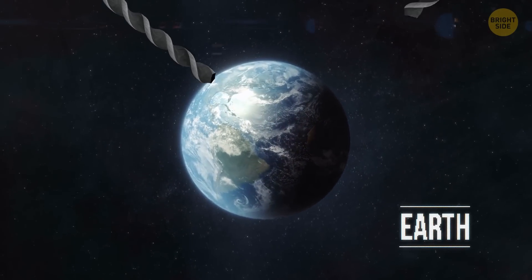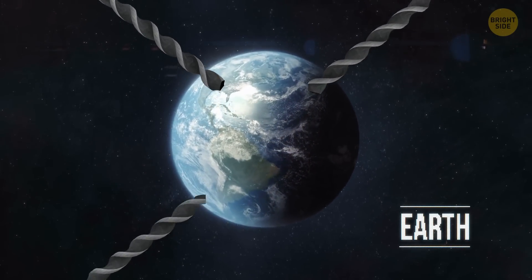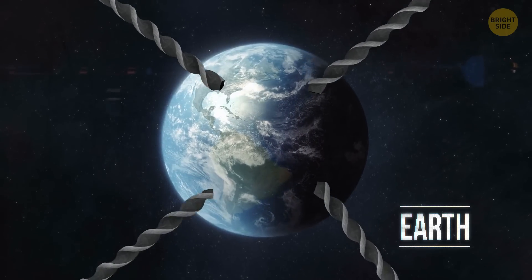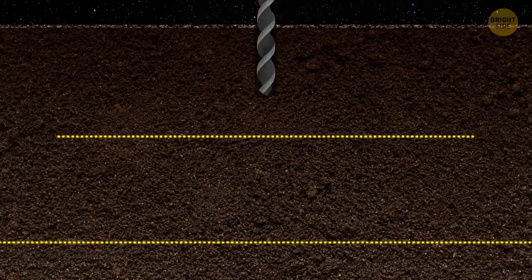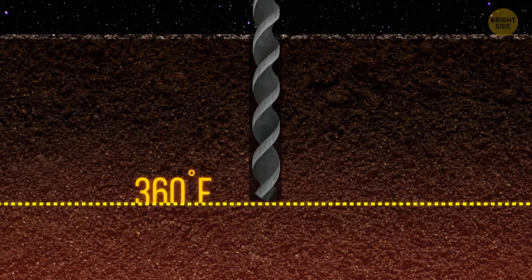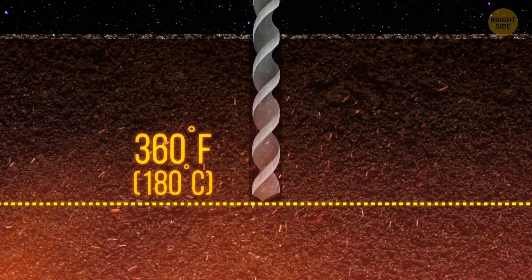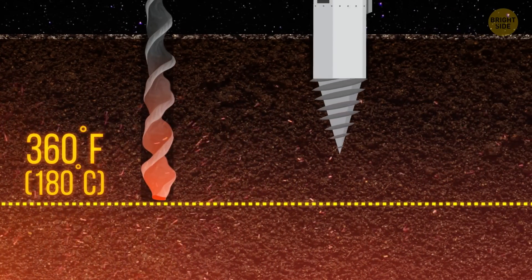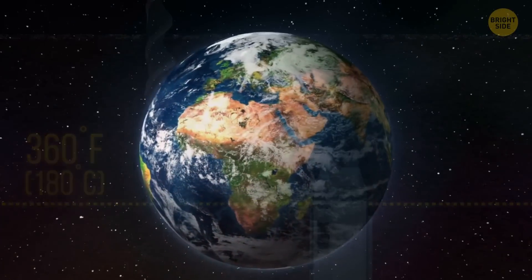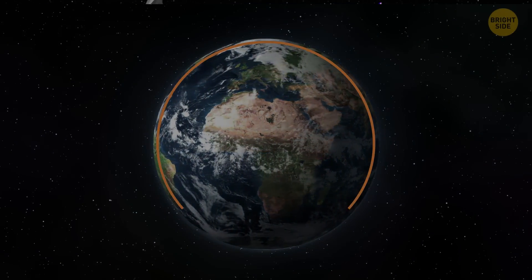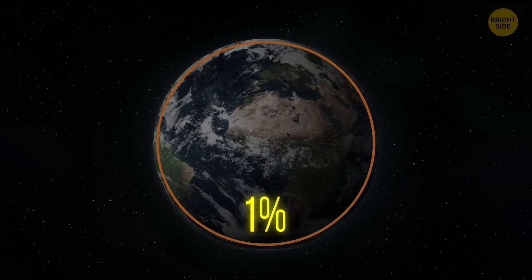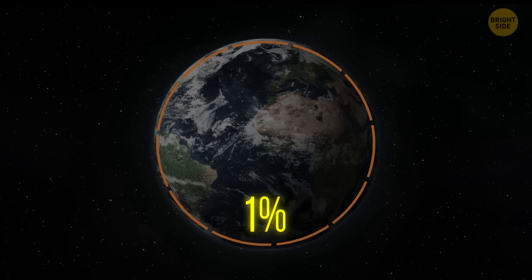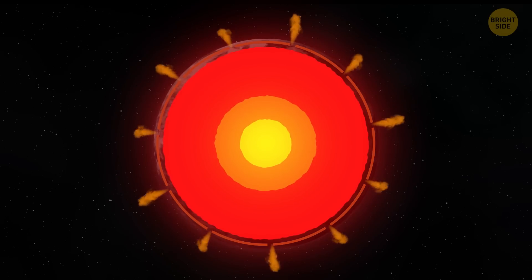People have drilled pretty deep holes here, but they were never deep enough to even get through the crust. After the drills traveled one-third of the way, the temperature reached 360 degrees, and the equipment couldn't operate any longer. But your drill is much stronger than that. That's why you easily move through the crust. It takes up only 1% of Earth's volume and is broken into tectonic plates. They let heat escape from the Earth's interior.